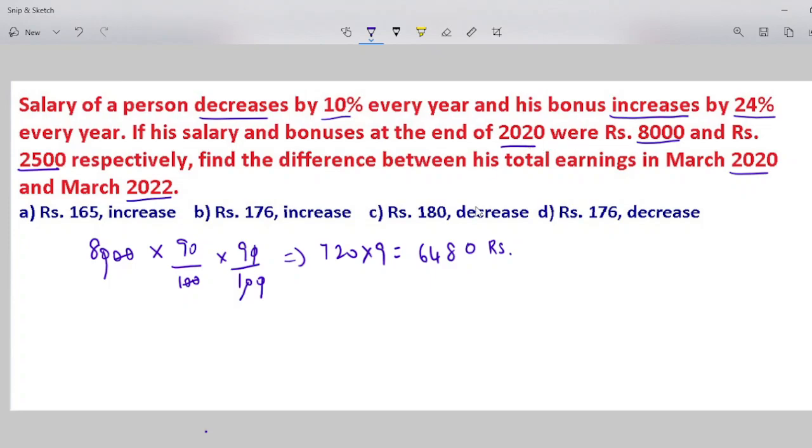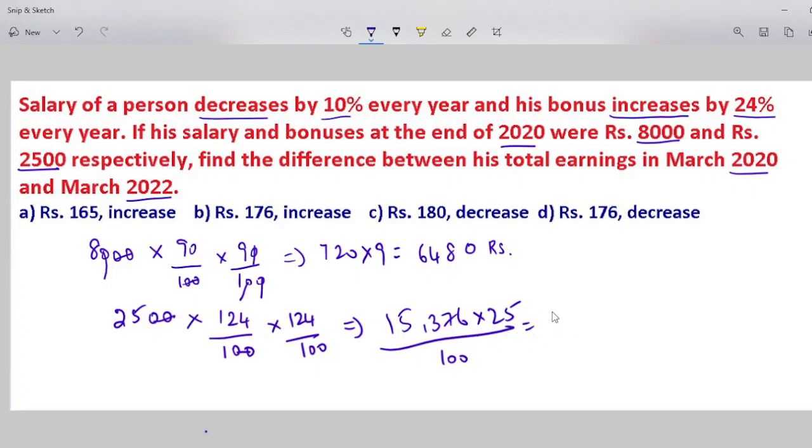Next, for bonus which increases, the bonus in 2022 is 2500 times 24% increase. So 124 divided by 100, 124 divided by 100. Two ciphers on each. Then 124 into 124, first multiply to get 15,376. Then 25 multiplied gives us the final value, 100 divided by 100. So 15,376, then 25 multiply gives 384,400. With two ciphers struck, we get 3844.